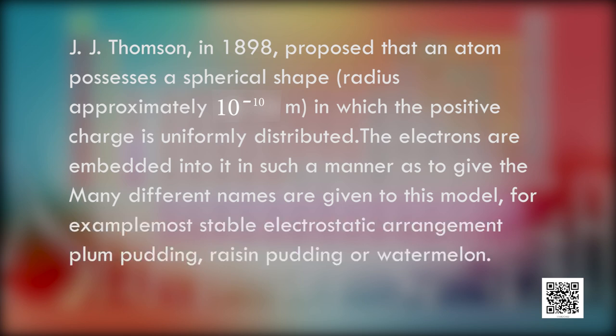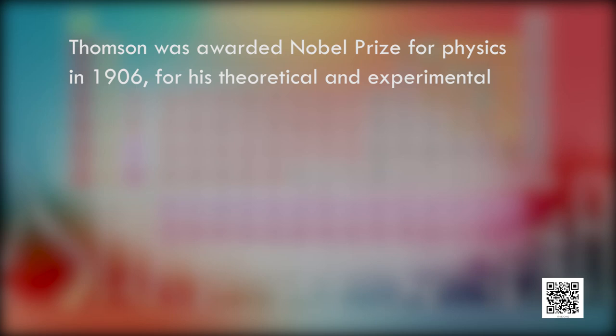This model was given many names — the plum pudding model, where the whole pudding represents positive charge and the embedded plums represent electrons, or the watermelon model, where the red part is the positive charge and the black seeds are the electrons. An important feature is that the mass of the atom is assumed to be uniformly distributed. This model explains overall electroneutrality of the atom very well, and for this, Thomson was awarded the Nobel Prize for Physics in 1906 for his theoretical and experimental investigations on the conduction of electricity by gases.